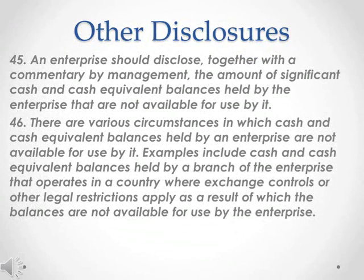Para 45. An enterprise should disclose, together with a commentary by management, the amount of significant cash and cash equivalent balances held by the enterprise that are not available for use by it. Para 46. There are various circumstances in which cash and cash equivalent balances held by an enterprise are not available for use by it. Examples include cash and cash equivalent balances held by a branch of the enterprise that operates in a country where exchange controls or other legal restrictions apply, as a result of which the balances are not available for use by the enterprise.